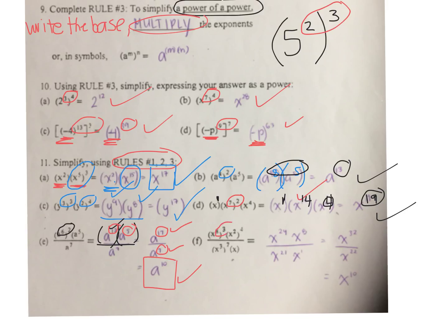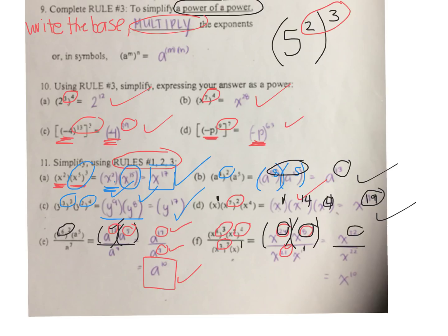Last one: 8 times 3 is 24; 2 times 4 is 8. Denominator: 3 times 7 is 21, multiplied by x to the power of 1 — don't forget this invisible 1. Simplify the numerator: x to the power of 24 times x to the power of 8 — add the exponents to get x to the power of 32. Divided by x to the power of 22 — add the 1. Subtract: 32 take away 22 gives x to the power of 10.